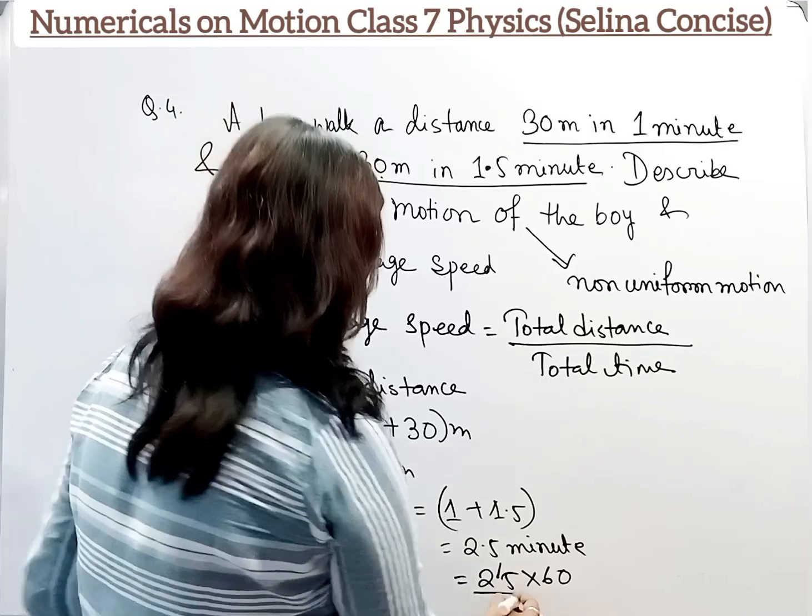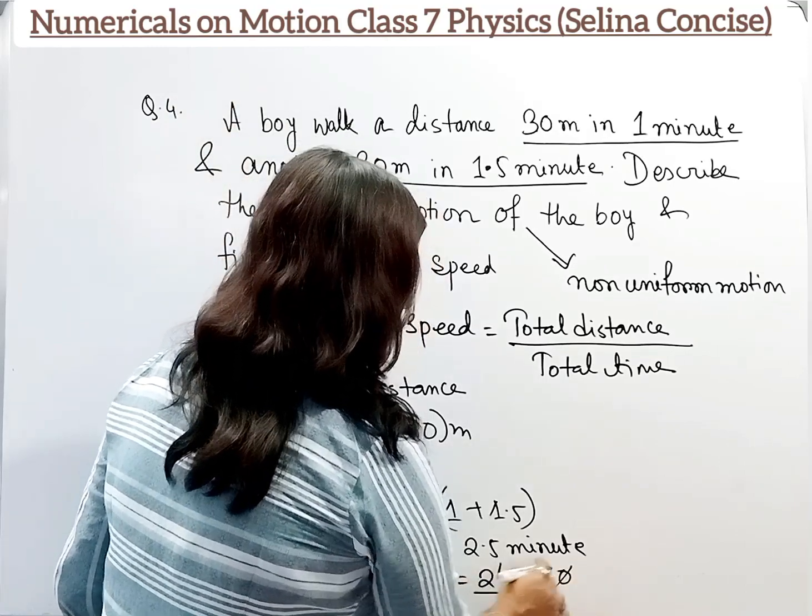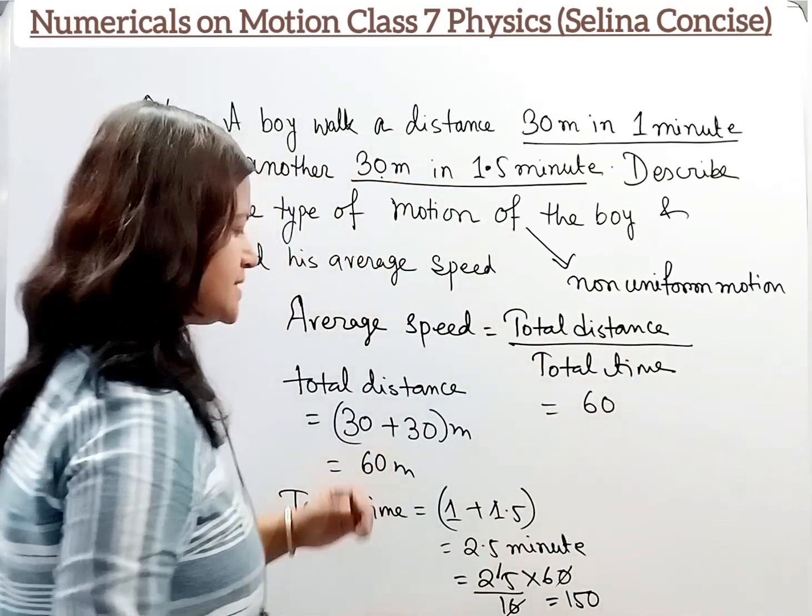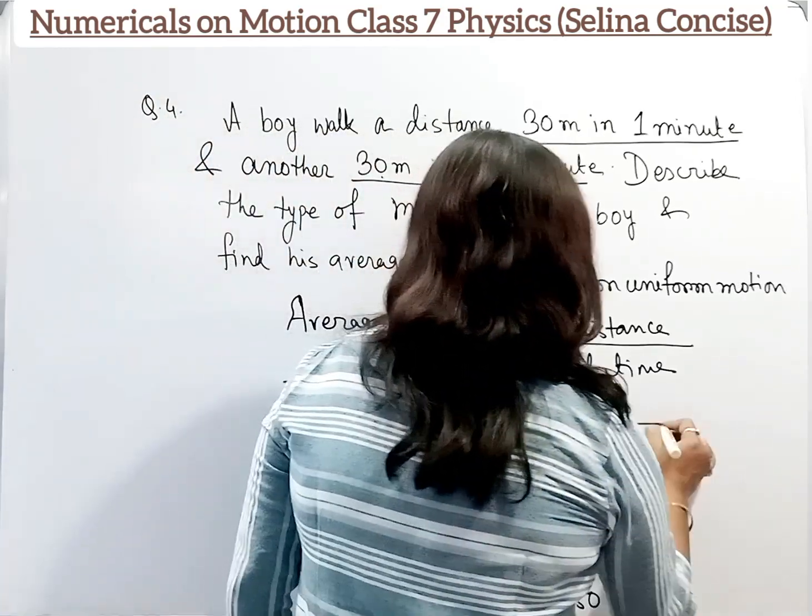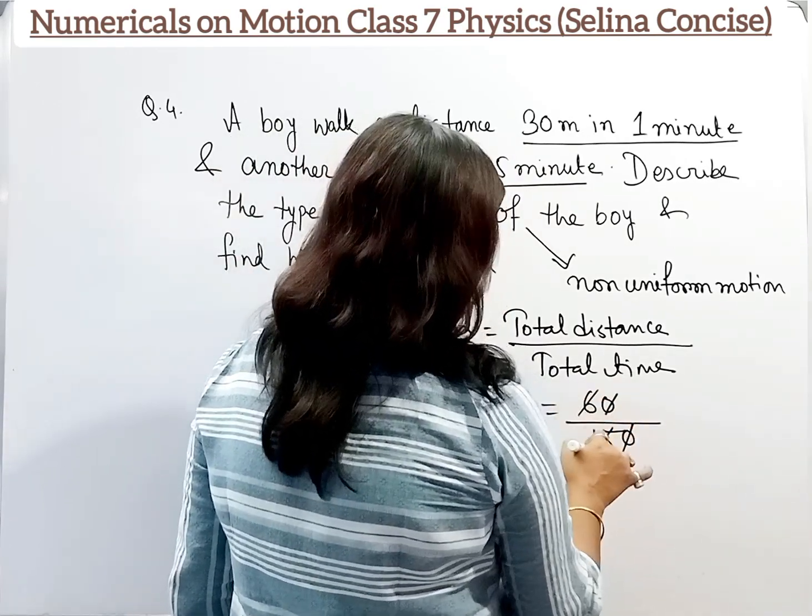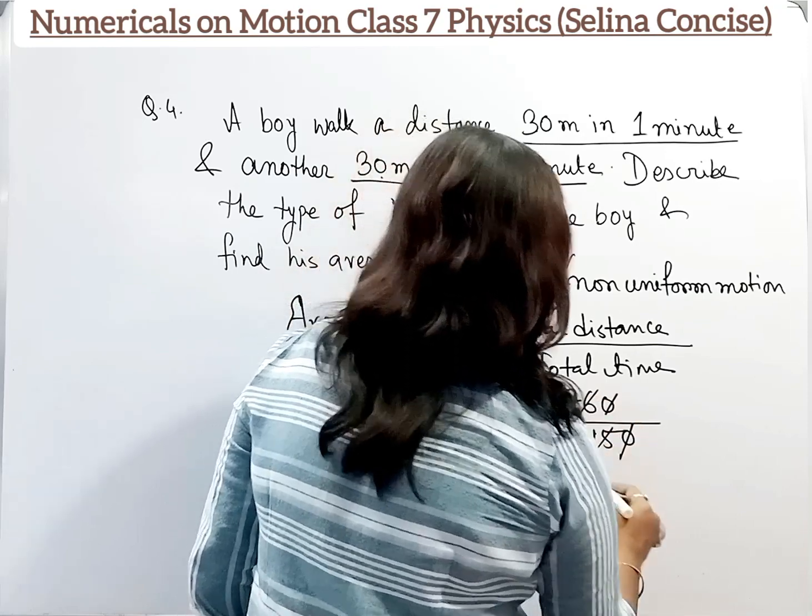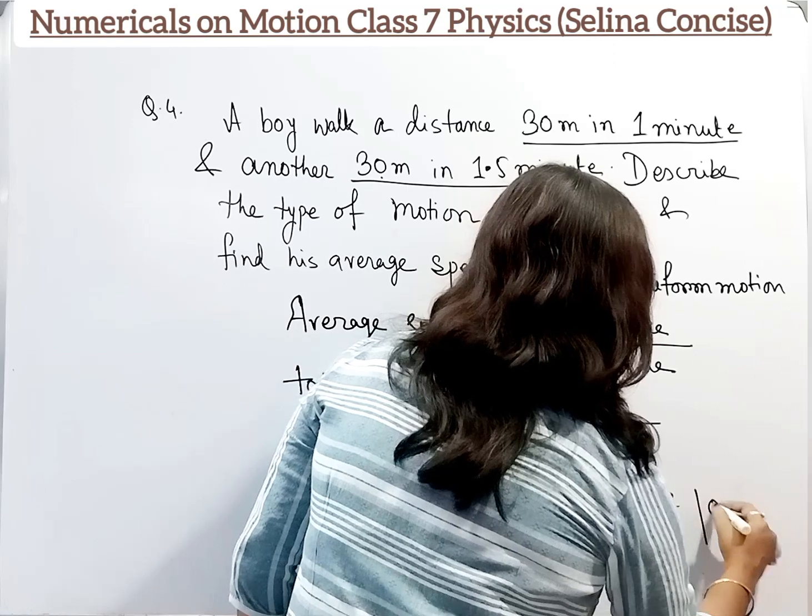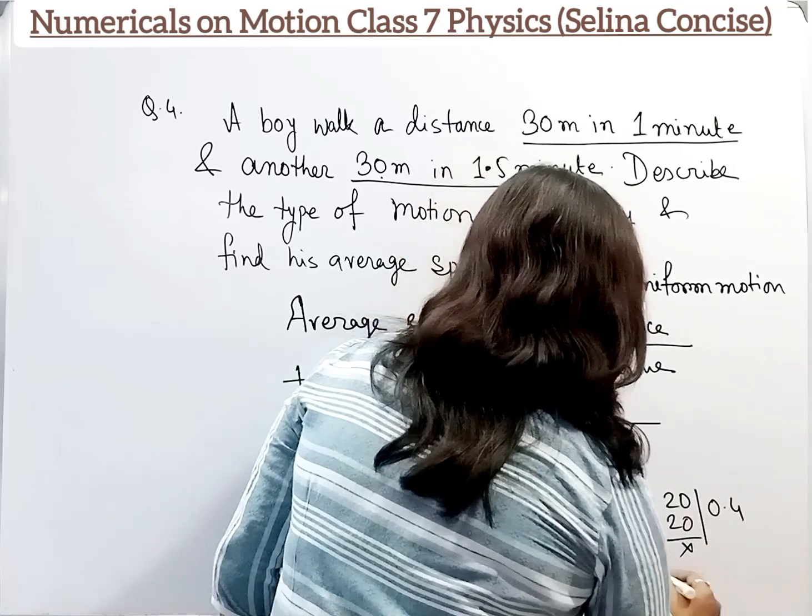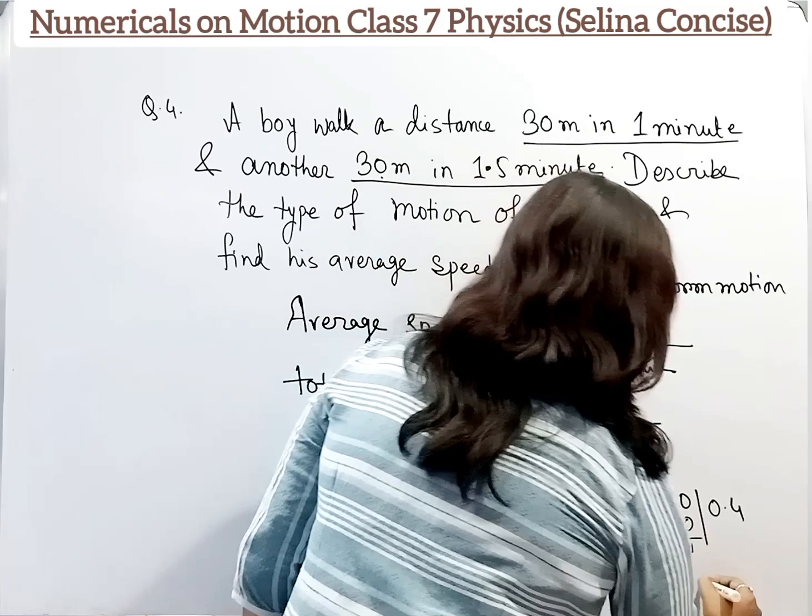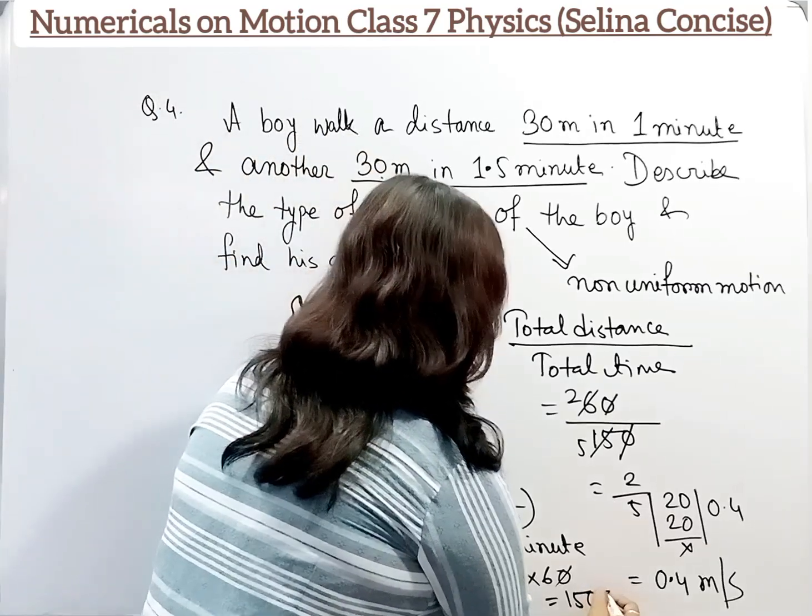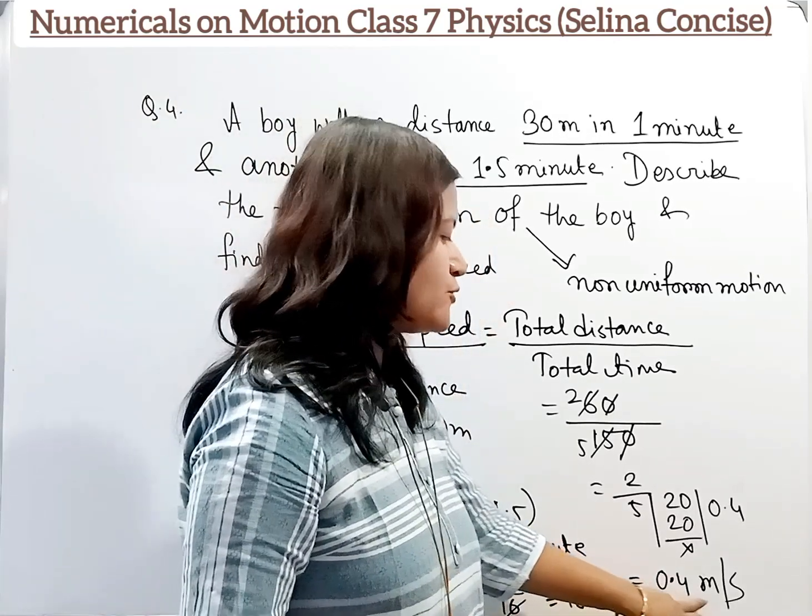Moving the decimal and dividing by 10, the zeros cancel, giving us 25 into 6 equals 150. So total distance is 60 and total time is 150. Canceling the zeros and reducing both by 3 gives us 2 by 5. Using decimal division, 5 into 20, so our answer is 0.4. This is speed, so the unit will be meters per second because we took distance in meters and time in seconds. That's why the unit will be 0.4 meters per second.